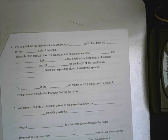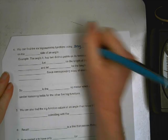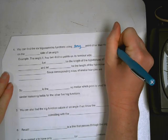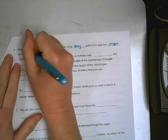Alright, we can find the six trigonometric functions using any point other than the origin on the terminal side of an angle.